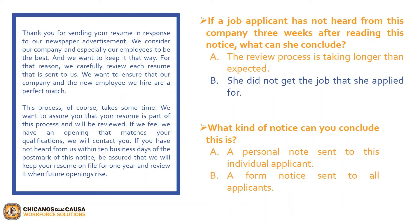Answer the first provided question. If a job applicant has not heard from this company three weeks after reading this notice, what can she conclude? Given the context provided in the letter, the correct answer is B — she did not get the job that she applied for. The notice says the review process takes time and the company will contact the applicant if she matches the opening. If she doesn't hear from them within 10 business days, her resume will go on file. You can conclude that if she hasn't been contacted in that time, she did not get the job. Let's look at the second question: what kind of notice can you conclude this is? The way the notice is worded with no personal details leads us to believe the correct answer is B — a form notice sent to all applicants.